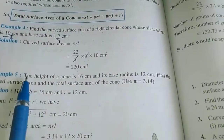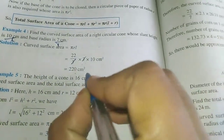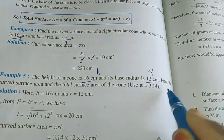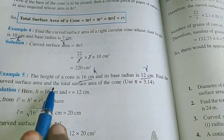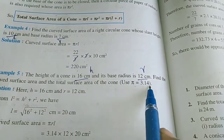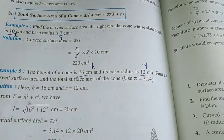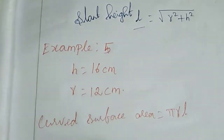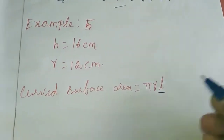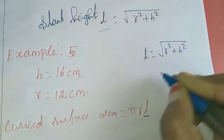Now the fifth sum. The height of a cone is 16 centimetres, that is h is 16 centimetres, and its base radius r is 12 centimetres. Find the curved surface area and the total surface area of the cone, use pi equal to 3.14. Curved surface area equals pi r l, so we need l. l equals square root of r square plus h square, this one we know.